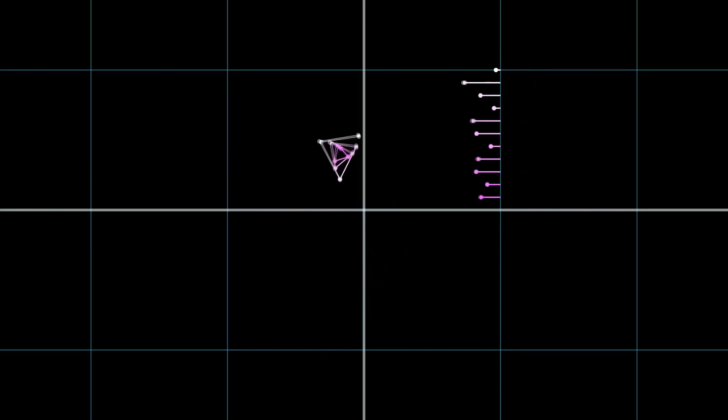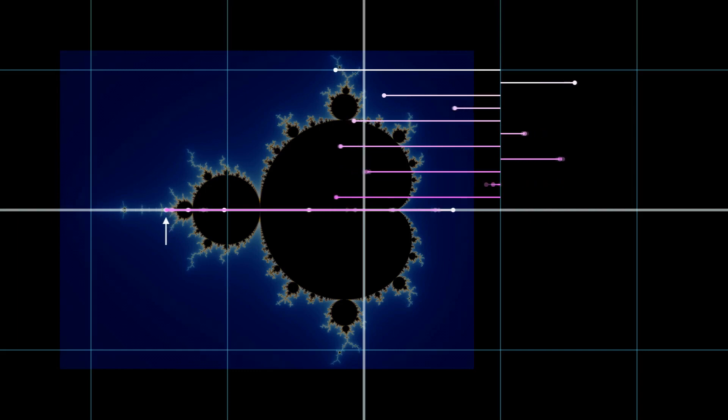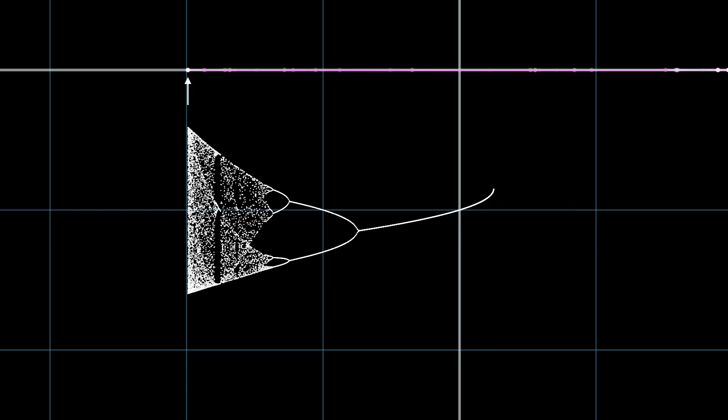Remember, we are checking the long term behavior by iterating the equation of the Mandelbrot set. Let's see what happens when we go along the x axis. Now let's plot this on a bifurcation diagram. If we continue the same process for every point in the Mandelbrot set, we get this visualization.